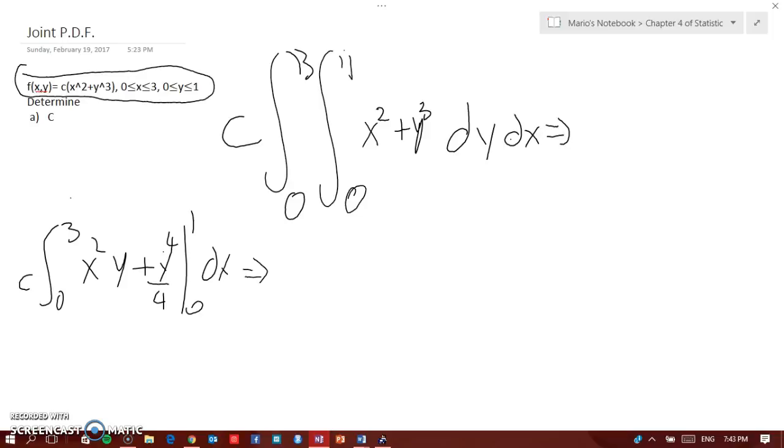That would be C integral from 0 to 3 of x squared plus 1 over 4 dx. And that would be C, now we are integrating this in respect to x, so I'll be C x cubed over 3 plus 1/4 x from 0 to 3.